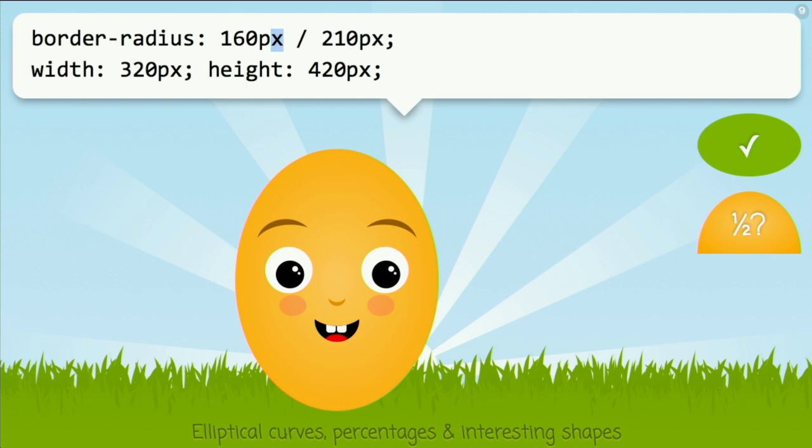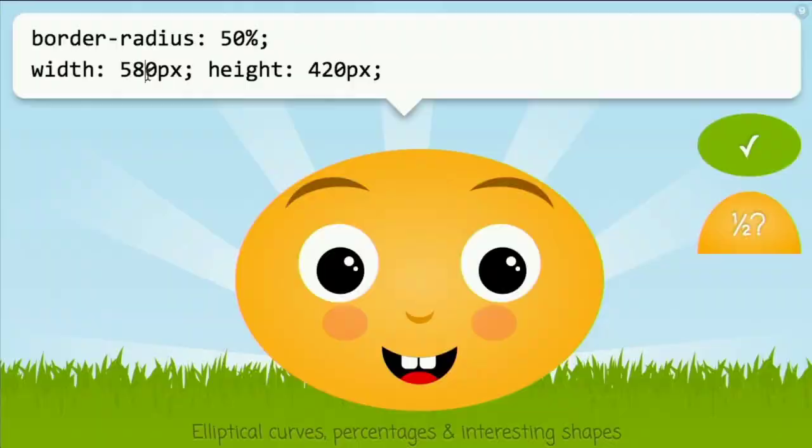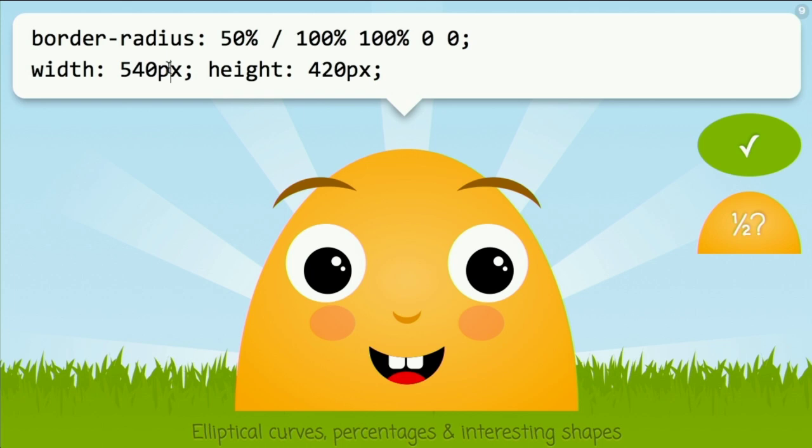BorderRadius also accepts percentages, and percentages are resolved based on the corresponding dimension — horizontally they're based on the width, and vertically based on the height. Since they're the same number before and after the slash, we don't even need the slash anymore. So now we can just change the dimensions and it just naturally works. So half an ellipse: because this half ellipse is symmetrical horizontally, it's just 50%, then we have 100% radii for the top corners and zero for the bottom ones — and there you have half a very flexible ellipse.